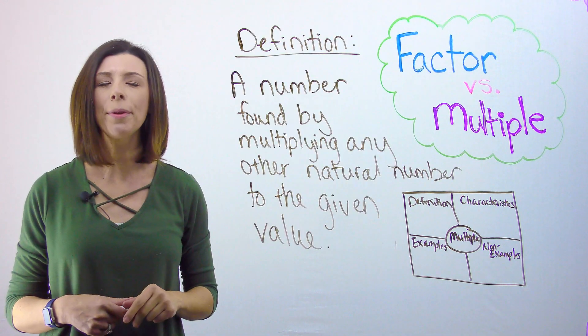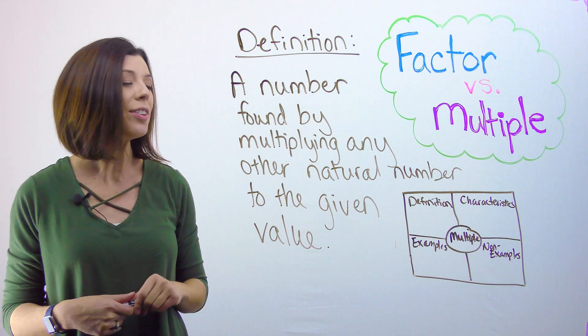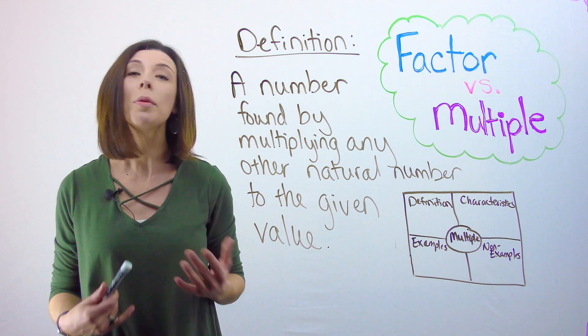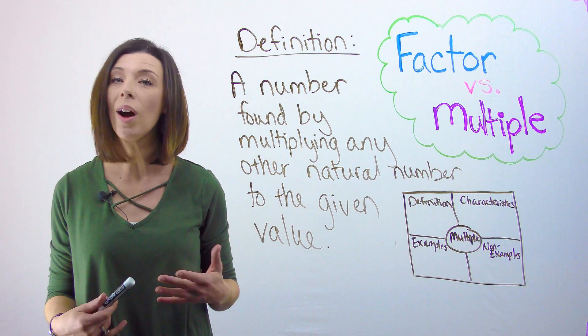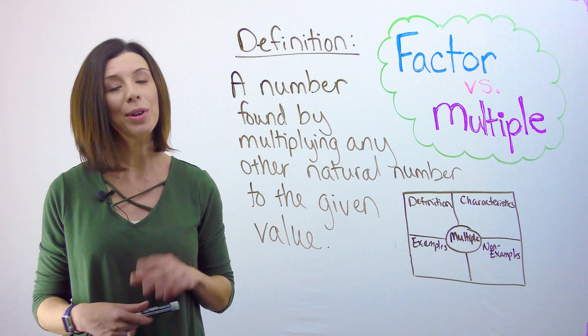Hopefully you came up with a definition similar to mine that says a number found by multiplying any other natural number to the given value. Remember, natural numbers are 1, 2, 3, 4, 5, etc. They don't include zero.